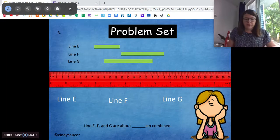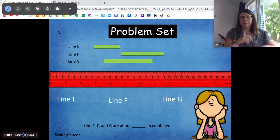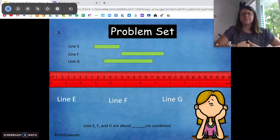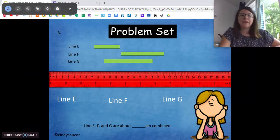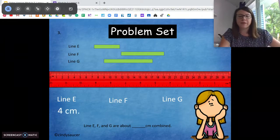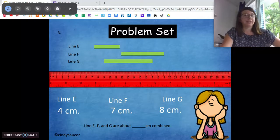Okay, so go ahead and pause the video again. Measure the lengths of line E, F, and G. Unpause when you're ready. Ready? Okay, line E, you should have got about four centimeters. Line F, seven centimeters. And line G, eight centimeters.